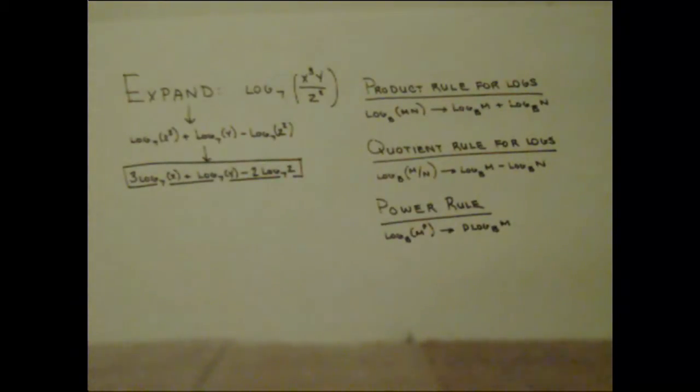We begin this problem by noticing that x to the third is being multiplied with y and that we can change this to addition. We also notice that this quantity is being divided by z squared, so we subtract this from the two values being added.